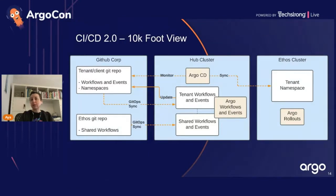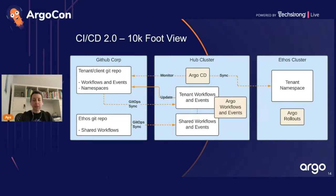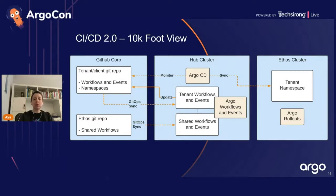Here is a high-level view of our new architecture. On the left is GitHub Corp. On the right are the clusters where tenants deploy their services and applications — note these clusters are not connected to the corp network and don't have access to GitHub Corp. In the middle, we're bringing up the hub cluster in what we call our mission control AWS account, which has access to both the corp network and all clusters in our fleet. We use this hub cluster for running Argo Workflows and Events in tenant-specific namespaces, and the hub cluster also has Argo CD running, remotely connected to all clusters. On each remote cluster, we have Argo Rollouts — implementing a hub and spoke model.